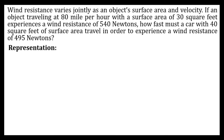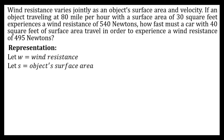We can find the variables in our first sentence: we have the wind resistance, the surface area of the object, and the velocity of the object. So let W be equal to the wind resistance, let S be equal to the object's surface area, and let V be equal to the object's velocity. Since we use the word 'varies jointly,' we're going to translate this as an equation.